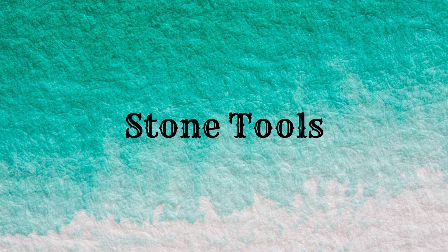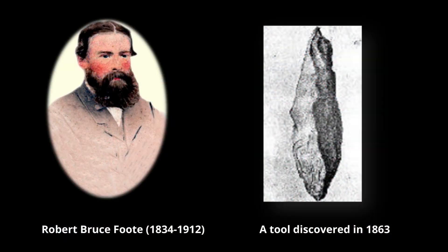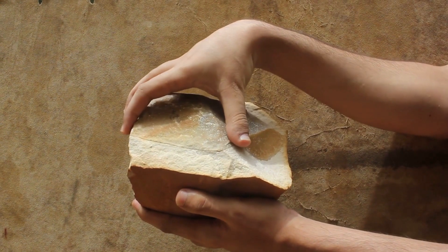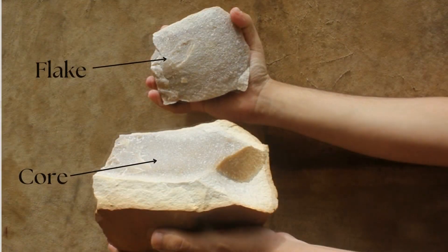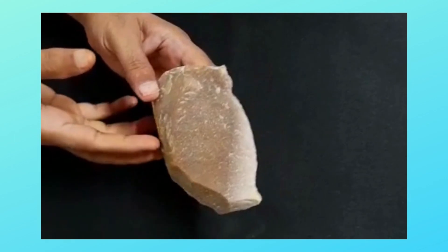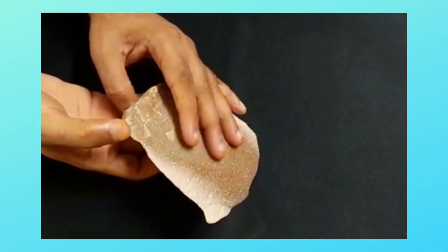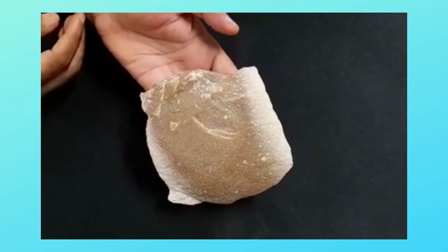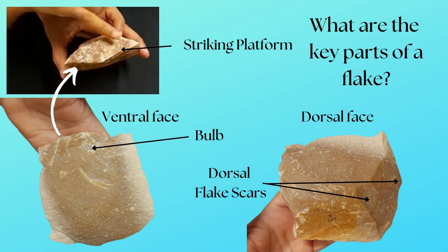Did you know that the first Paleolithic stone tool was found in India by Robert Bruce Foote way back in 1863? How do you think he identified it? At prehistoric sites, we see cores — the parents from which flakes were struck off. Can you see the core and the scars left behind by the detached flakes? Flakes are pieces that were struck off from cores. We can identify flakes by looking at clues — can you see the bulb of percussion and a striking platform where it was hit?